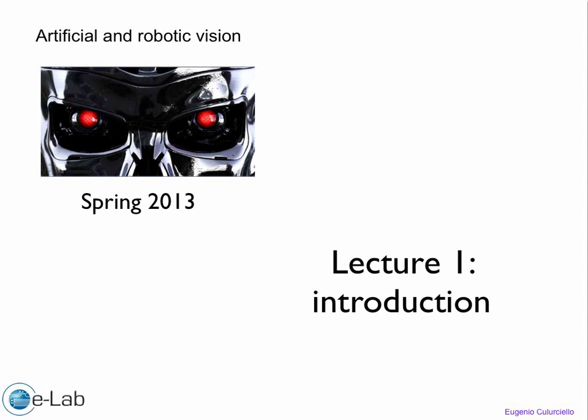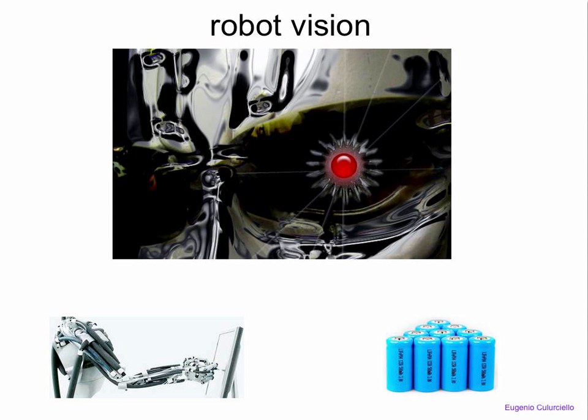First of all, this is Lecture 1, and it is an introduction to the course. The main purpose of this course is to create and engineer a system that can give robots vision.